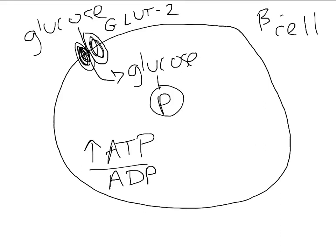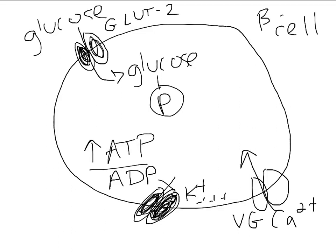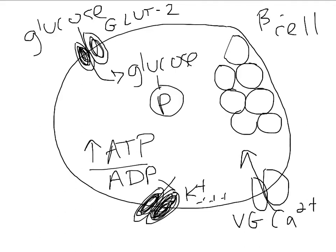The increase in ATP to ADP ratio causes an ATP-sensitive potassium channel to close. When that potassium channel closes, a depolarization occurs. That depolarization causes voltage-gated calcium channels to open and calcium moves into the cell. The increase in calcium in the beta cell causes secretory granules that have insulin already in them to be secreted, and then insulin goes into the blood.